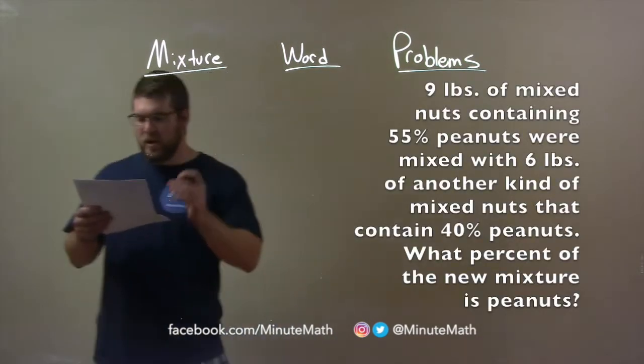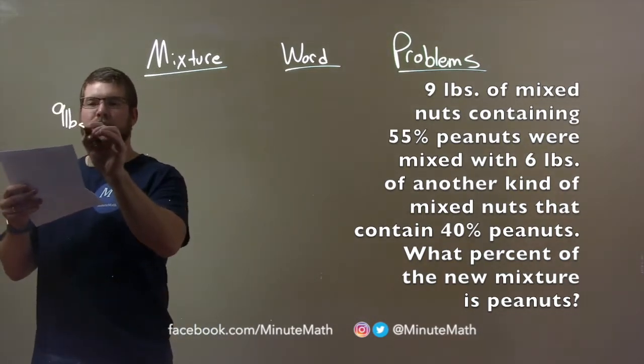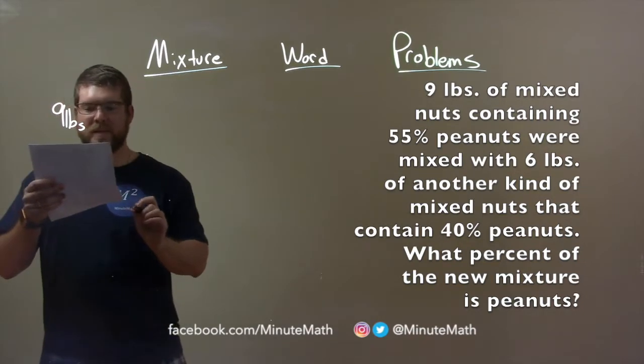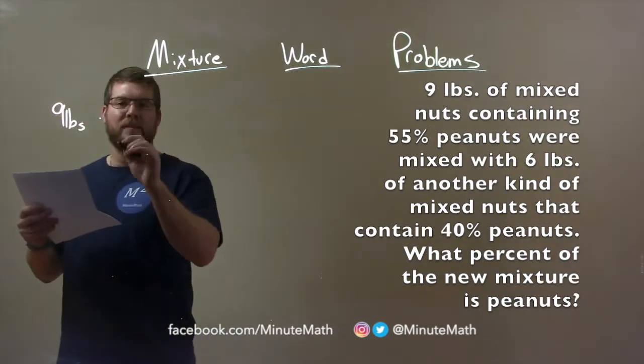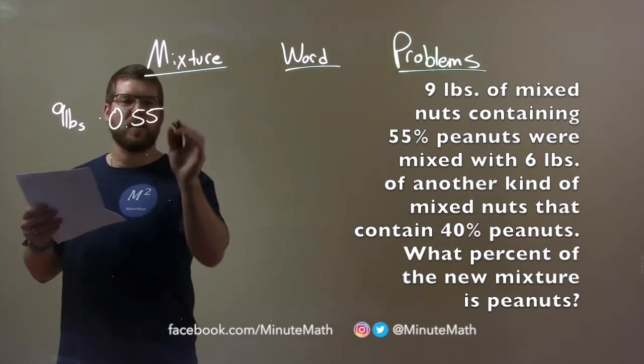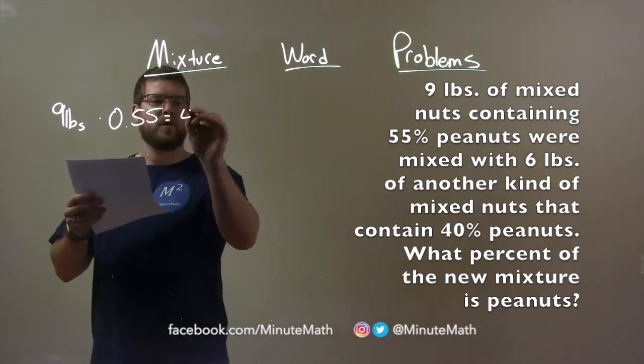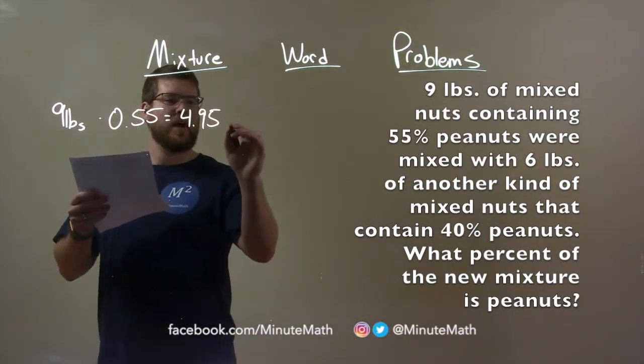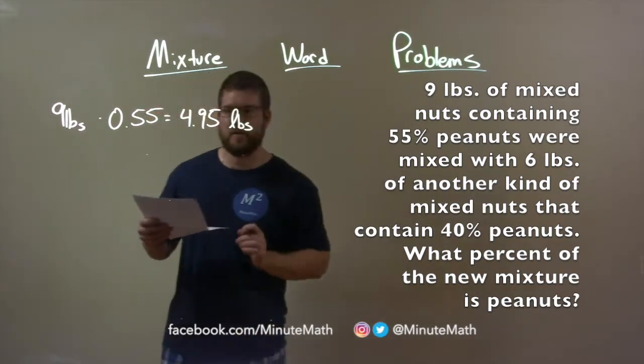Okay, so let's start with this. We have nine pounds. So that's nine pounds of mixed nuts containing 55% peanuts. So that as a decimal is 0.55. Multiplying that out, that comes out to be 4.95. And that's the first mixture has 4.95 pounds of peanuts in it.